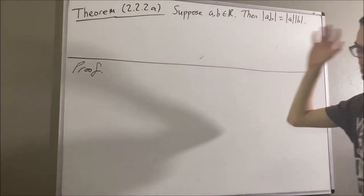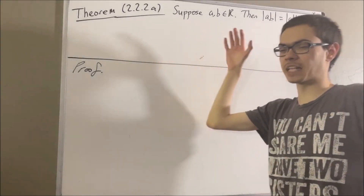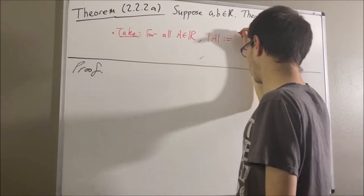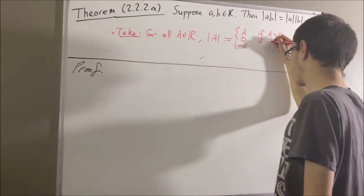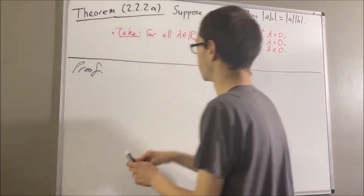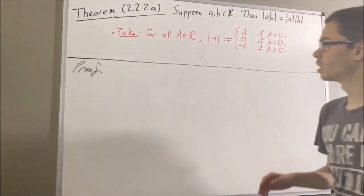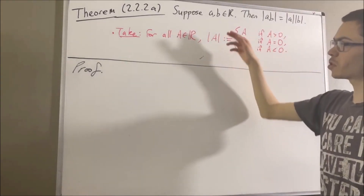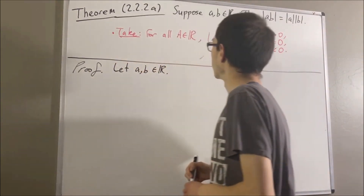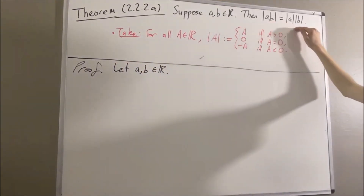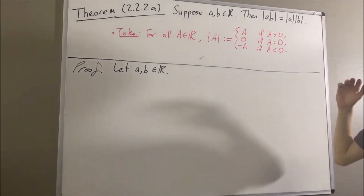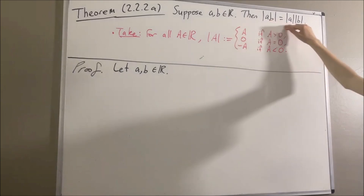We're going to say that our definition of absolute value is as follows. So now let's get into proving the theorem. To start out the proof, let's give ourselves two arbitrary real numbers A and B. To prove this statement, we're going to consider six cases, and in all six cases we're going to prove that this is true.